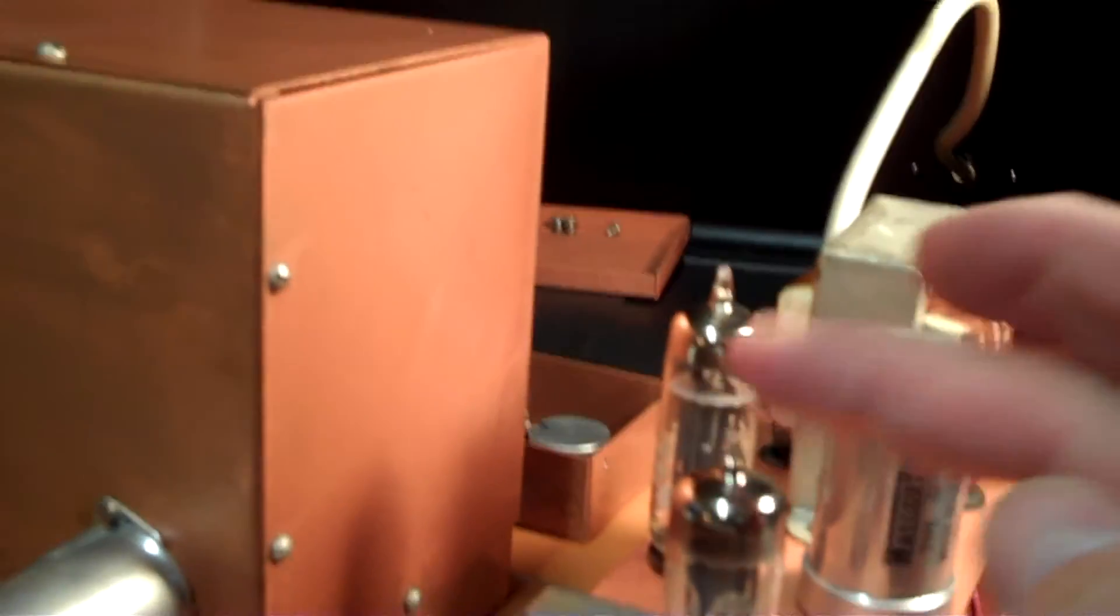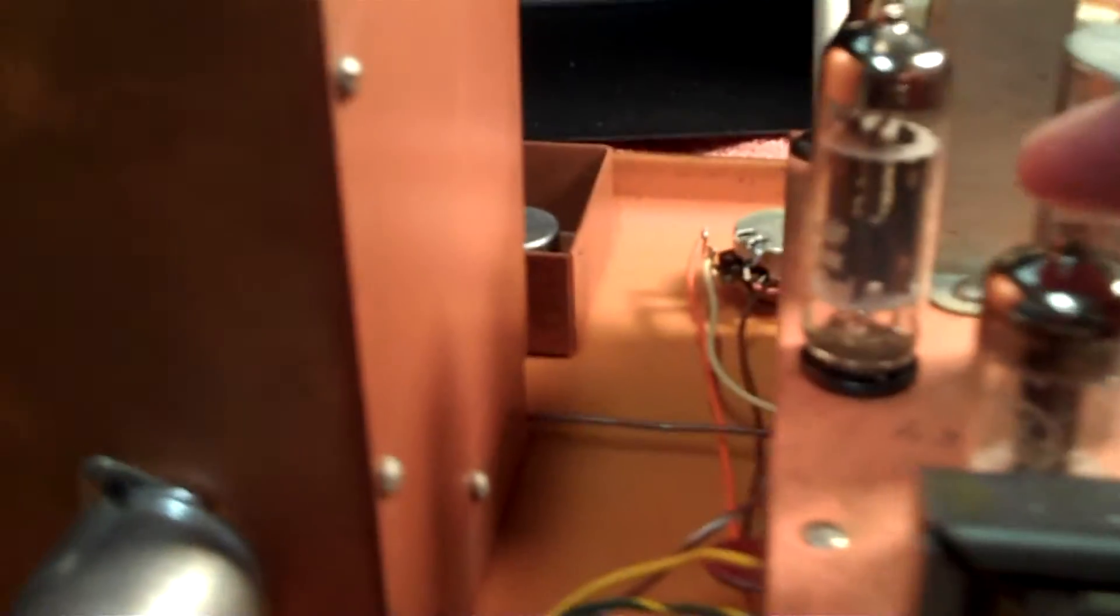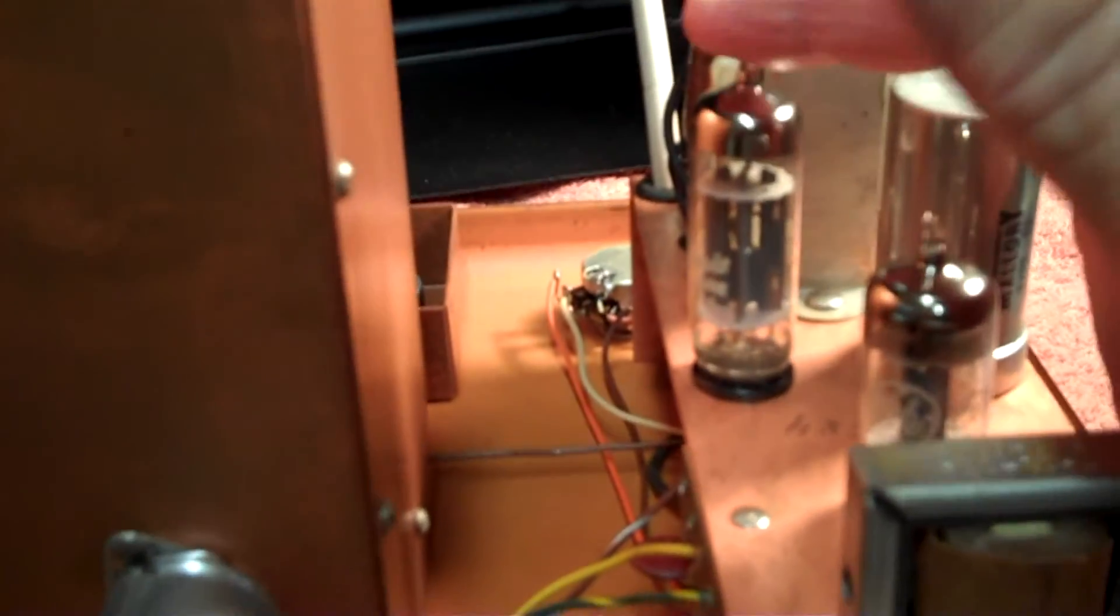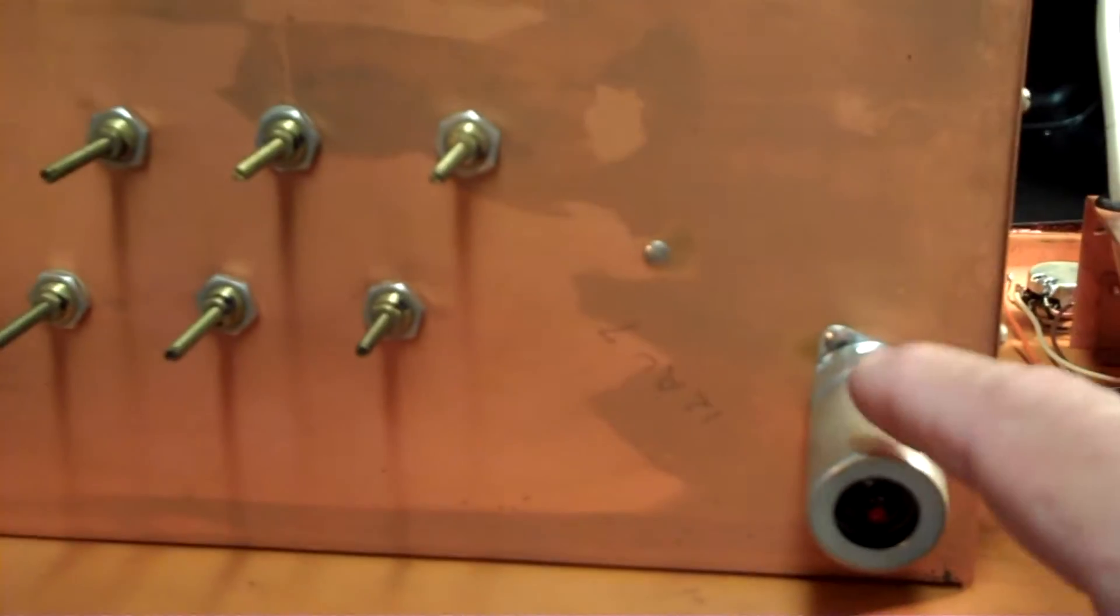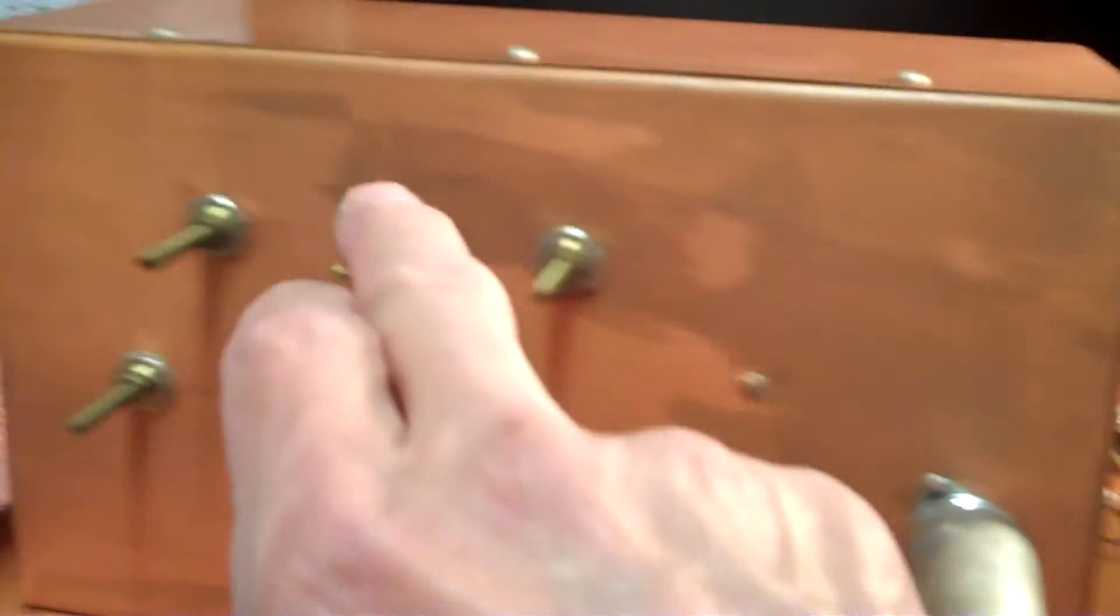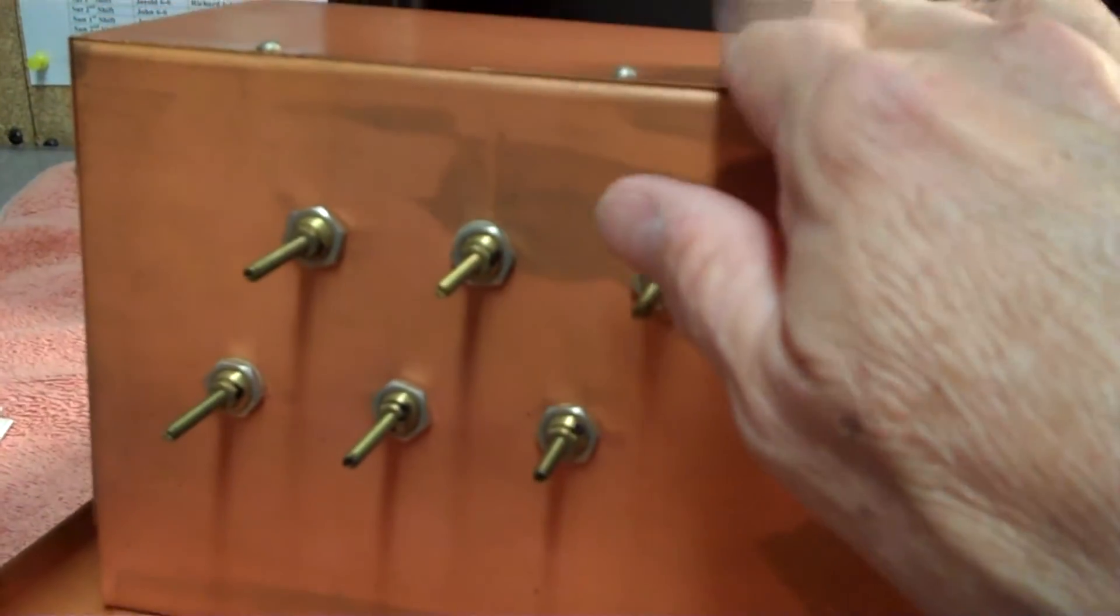All right, this thing has a 6C4, it has a 6X4, and it has a 12AU7, a three-tube operation. These, of course, are your coils inside this box. Very clean unit. Let's take a look at the other side of this box down over here to see what I found.